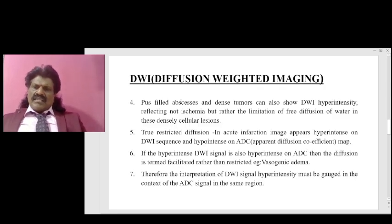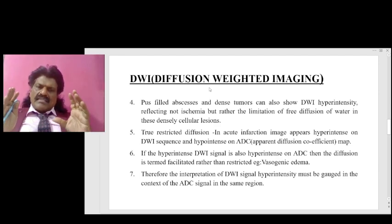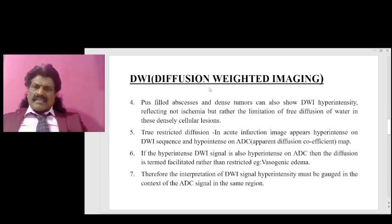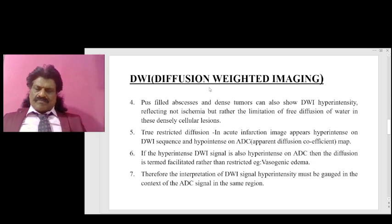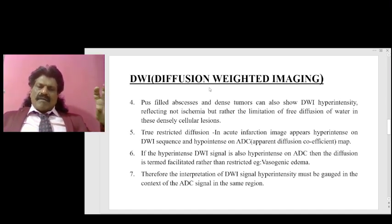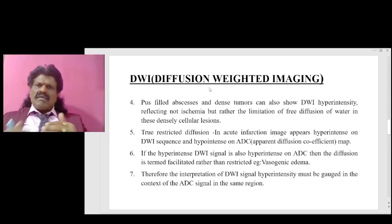Another important concept: in ischemic stroke there is a bright or hyperintense signal on DWI, but correspondingly it should produce a black or dark signal on ADC — Apparent Diffusion Coefficient. To confirm infarct, it should be bright on DWI and black or dark on ADC. This is what we call true diffusion restriction.